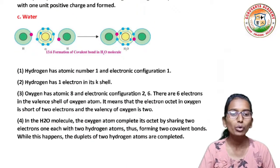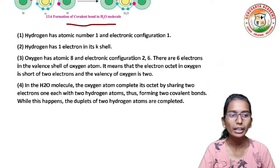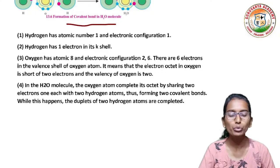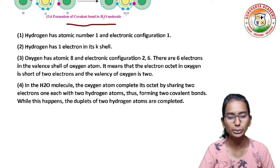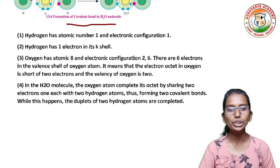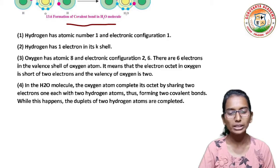For the formation of water (H2O) by covalent bonding: hydrogen has atomic number 1 and electronic configuration 1, with 1 electron in its K shell. Oxygen has atomic number 8 and electronic configuration 2,6; there are 6 electrons in the valence shell of oxygen, so oxygen is short of 2 electrons to complete its octet and its valence is 2. In the H2O molecule, the oxygen atom completes its octet by sharing 2 electrons, one each with 2 hydrogen atoms, forming two covalent bonds, while the duplets of both hydrogen atoms are completed.